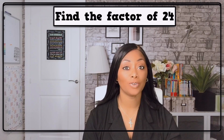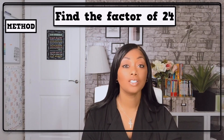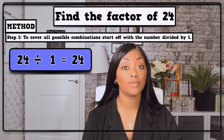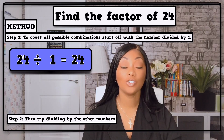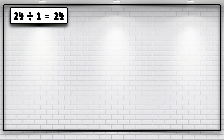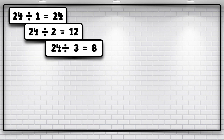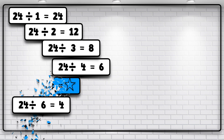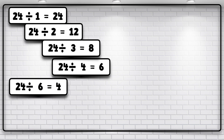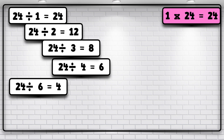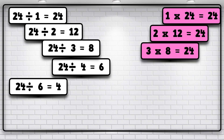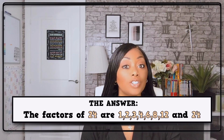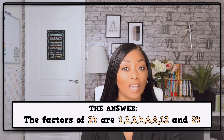Find the factors of 24. To cover all possible combinations, start off with the number divided by 1. So, 24 divided by 1 equals 24. Then try dividing by the other numbers. So, the factors of 24 are 1, 2, 3, 4, 6, 8, 12 and 24.